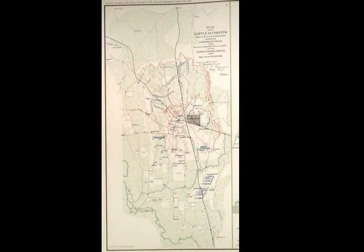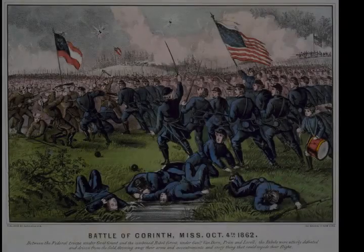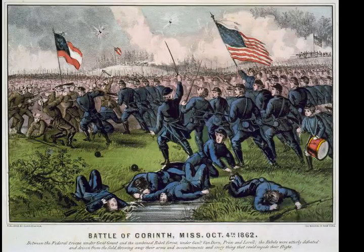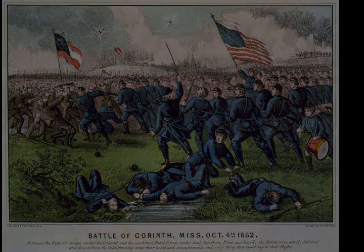Rosecrans's pursuit of Price was ineffectual. After Iuka, Grant established his headquarters at Jackson, Tennessee, a central location to communicate with his commands at Corinth and Memphis. Rosecrans returned to Corinth. Three divisions of Grant's Army of the Tennessee moved to Bolivar, Tennessee, northwest of Corinth, to join with Major General Stephen A. Hurlbut. Thus, Grant's forces in the immediate vicinity consisted of 12,000 men at Bolivar, Rosecrans's 23,000 at Corinth, Major General William T. Sherman's 7,000 at Memphis, and another 6,000 as a general reserve at Jackson.